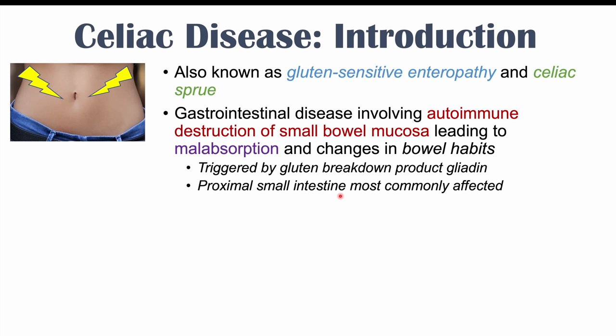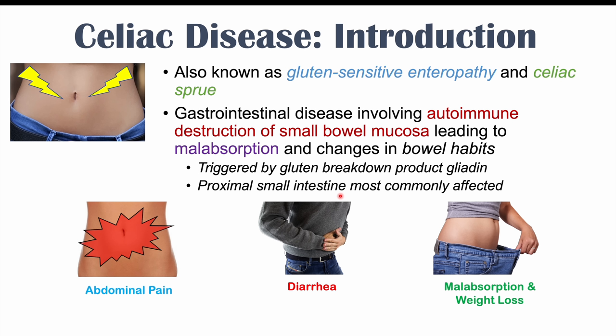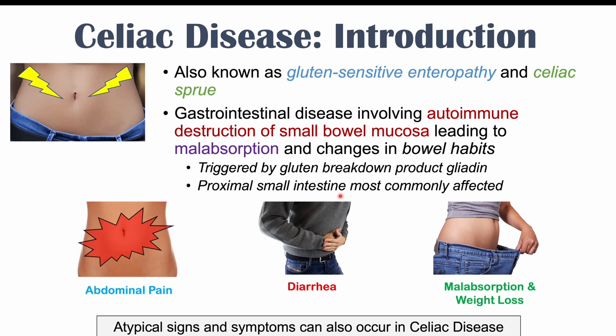Some of the most common signs and symptoms of celiac disease are abdominal pain, diarrhea — that change in bowel habit — and malabsorption with subsequent weight loss. The proximal small intestine is the first part of the small intestine, known as the duodenum. But the topic of this lesson is the weird or atypical signs and symptoms that can also occur in celiac disease, which may not present as patients expect.